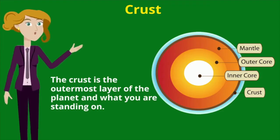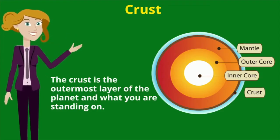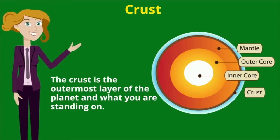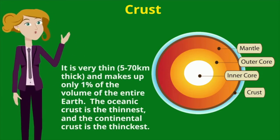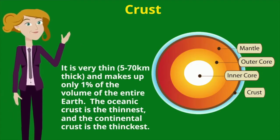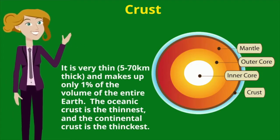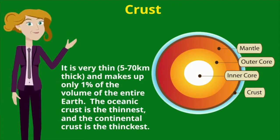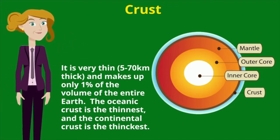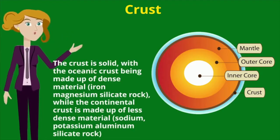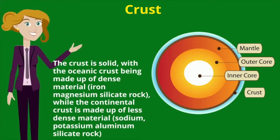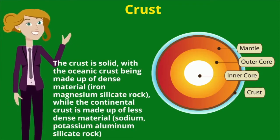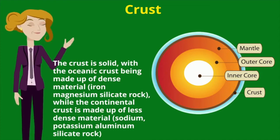The crust is the outermost layer of the planet and what you're standing on. It is very thin and makes up only 1% of the volume of the entire earth. The oceanic crust is the thinnest and the continental crust is the thickest. The crust is solid, with the oceanic crust being made up of dense material, while the continental crust is made up of less dense material.